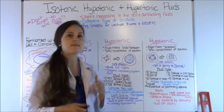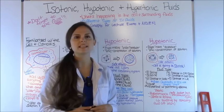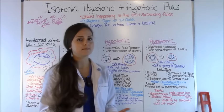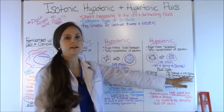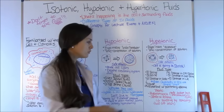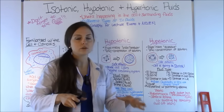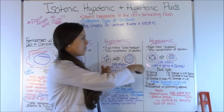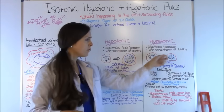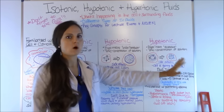Hypertonic fluids are typically given in the intensive care unit where a patient can be monitored very closely. They are given via a central line because hypertonic solutions are very hard on the veins and can cause phlebitis. You must give these in the ICU because the patient's condition can change very fast — these fluids can quickly cause fluid overload, leading to pulmonary edema, as all the fluid shifts into the vascular system.